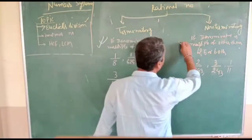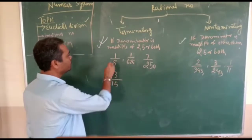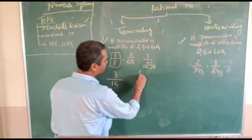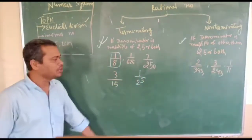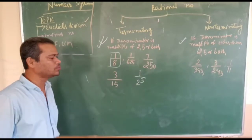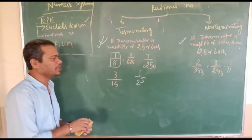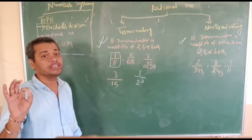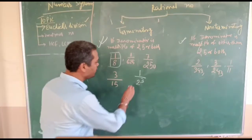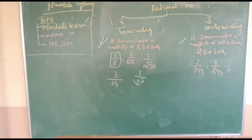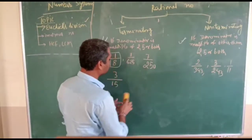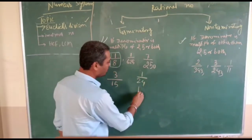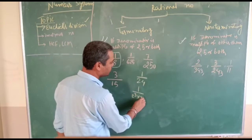If you take a few examples, things will become clearer. Take 1/8 — clearly 1/8 = 1/2³. Here the denominator is only and only a power of 2, which means the number is terminating. The denominator should have only factors of 2 and 5. If it had been 1/24, that would be 1/(2³ × 3), and since 3 came in the denominator, that means 1/24 is non-terminating.